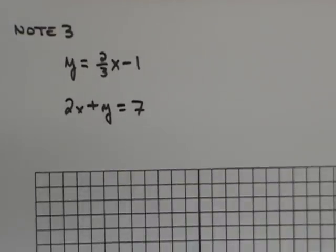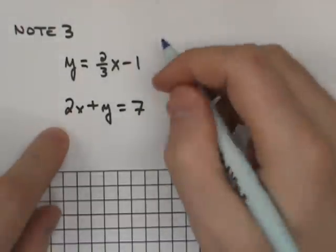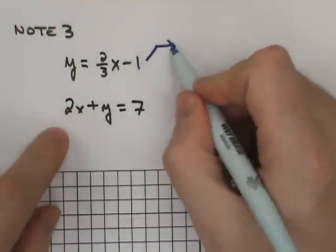Note 3. We have two forms of equations: slope intercept form and standard form. We need to pull out the pertinent information.